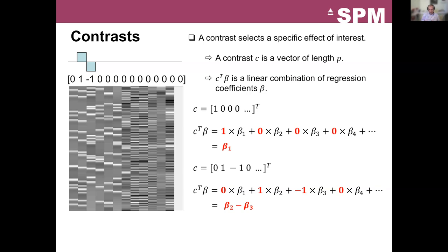This is very convenient because for whatever the design, the SPM machinery can handle the contrast. You really need to define the contrast according to the question you have — the contrast is a way of expressing the effect you are interested in. That's a critical point and something you should define even before you acquire your data. Define both the GLM design matrix that will model your data and the contrast that will allow you to interrogate it. That's something you must be defining before acquiring any data.